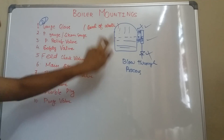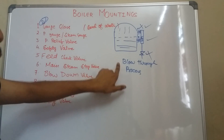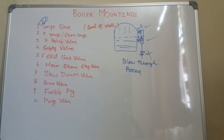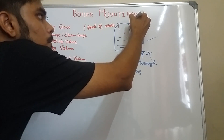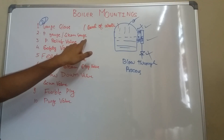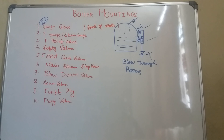So in a gauge glass, it is used for checking the level of water, and if it is showing wrong readings then the blow-through process is used. Next one is your pressure gauge or steam gauge. It is situated at the top of the boiler and is used to measure the pressure inside the boiler.